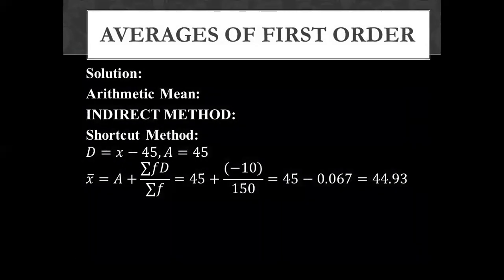These two totals we will write in the formula. We have A value is 45, summation fD is minus 10 and summation f is 150. If we solve this, 45 minus 0.067, then 44.93 we get, which we also got from direct method.